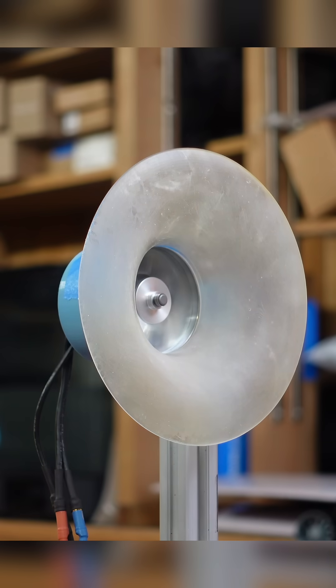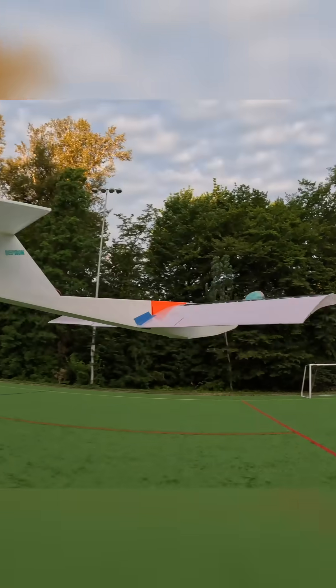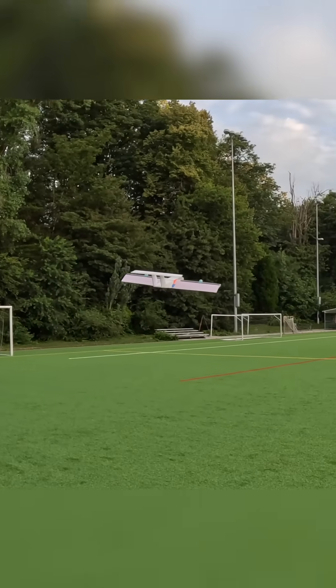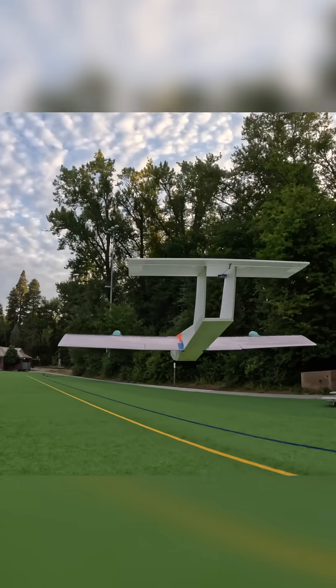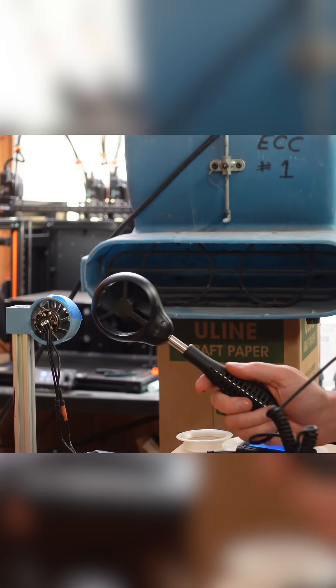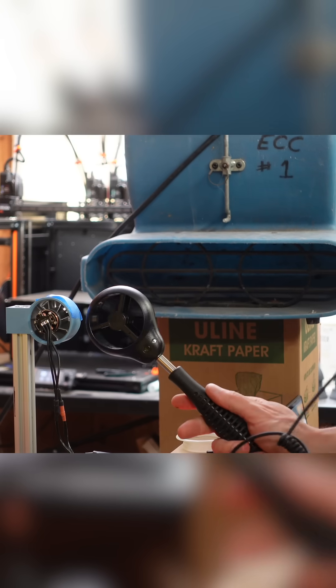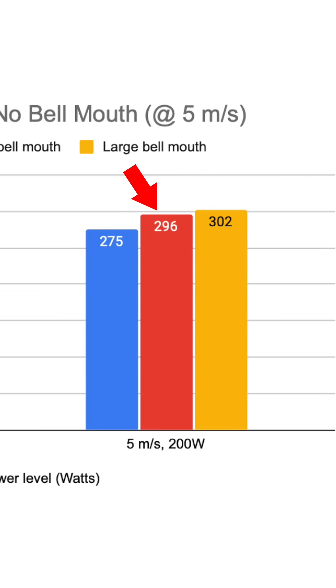Now all this data was just from static thrust, but in the real world, the plane is moving forward. Unfortunately, I don't have a fancy wind tunnel to run the tests in laminar flow, but I do have a blower fan that can move air at 5 meters per second. At this speed, the small bellmouth was 7.6% better and the large bellmouth was 9.8% better.